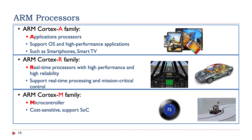ARM has processors for many applications. The Cortex A family supports operating systems and is used for high-performance applications such as smartphones, tablets, and smart TVs. The Cortex R family supports real-time, high-performance, high-reliability processing, used in aircraft controls, airbags, and other mission-critical controls. The ARM Cortex M family, on the other hand, are microcontrollers whose main goal is to lower the cost of the device while still providing high performance. In our course, we are going to use a microcontroller, so we will focus more on the Cortex M family.